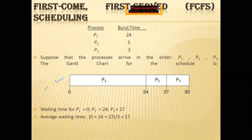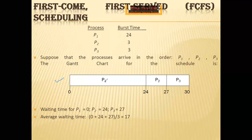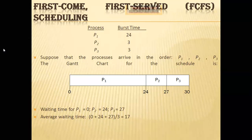These types of scheduling algorithms involve numerical calculations. Two parts will definitely be asked: what is the waiting time and what is the turnaround time? Waiting time is the sum of the periods spent waiting in the ready queue. Process P1 didn't wait, so its waiting time is 0 milliseconds. P2 waits for 24 milliseconds. P3 waits for 27 milliseconds. Adding all three waiting times and dividing by 3 gives the average waiting time.